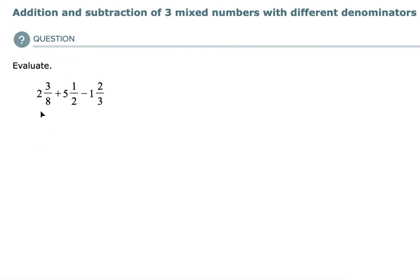You first want to convert them to their improper fraction form. So what I'm going to do is I'm going to do 8 times 2 makes 16, and then I take that 16 and add it to the numerator. 16 plus 3 makes 19. So this first fraction is now 19 over 8.